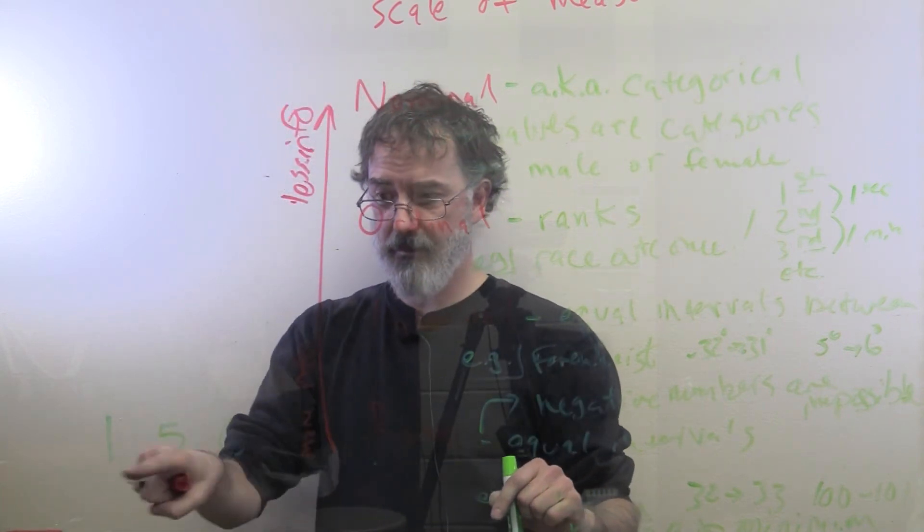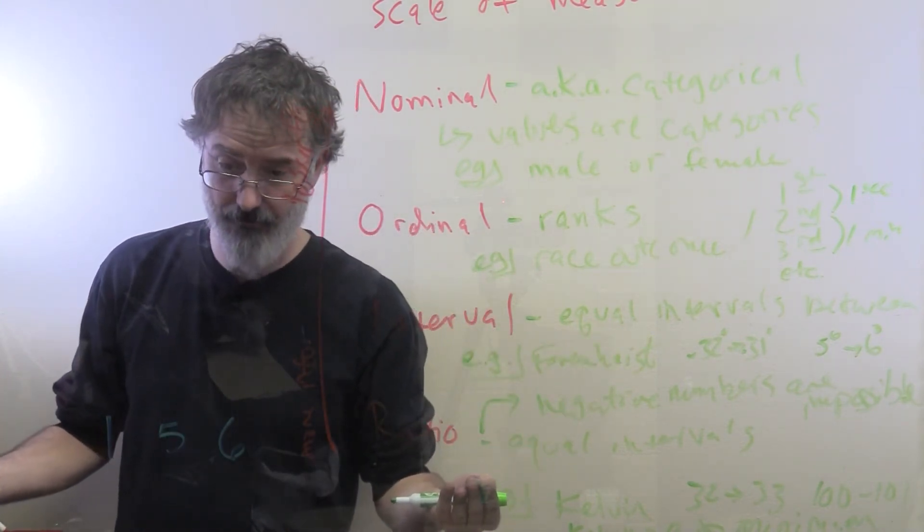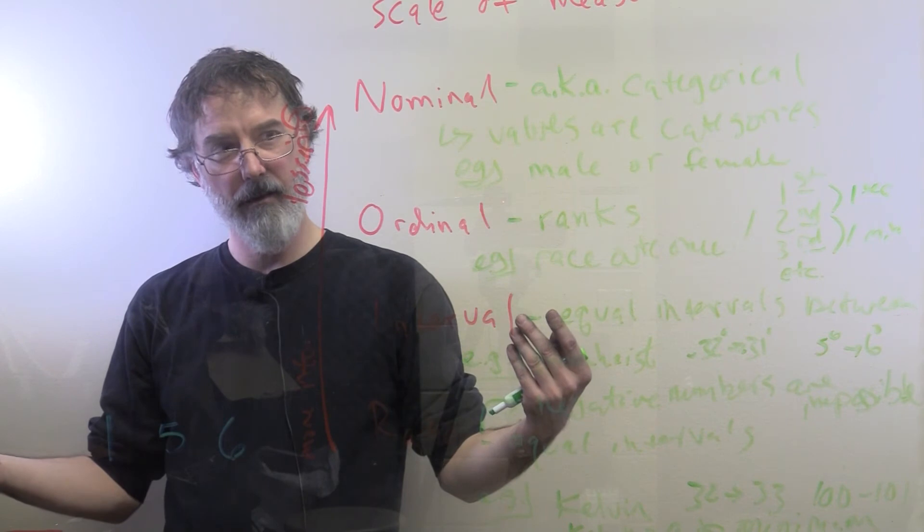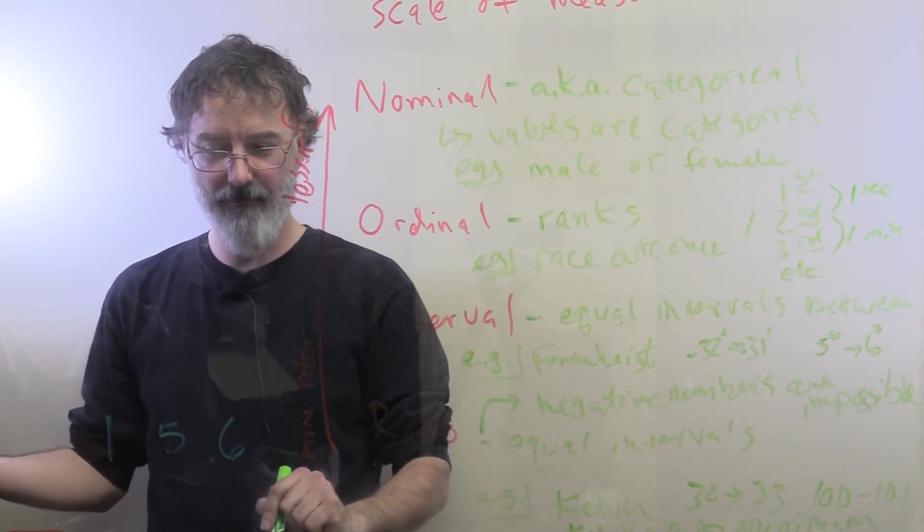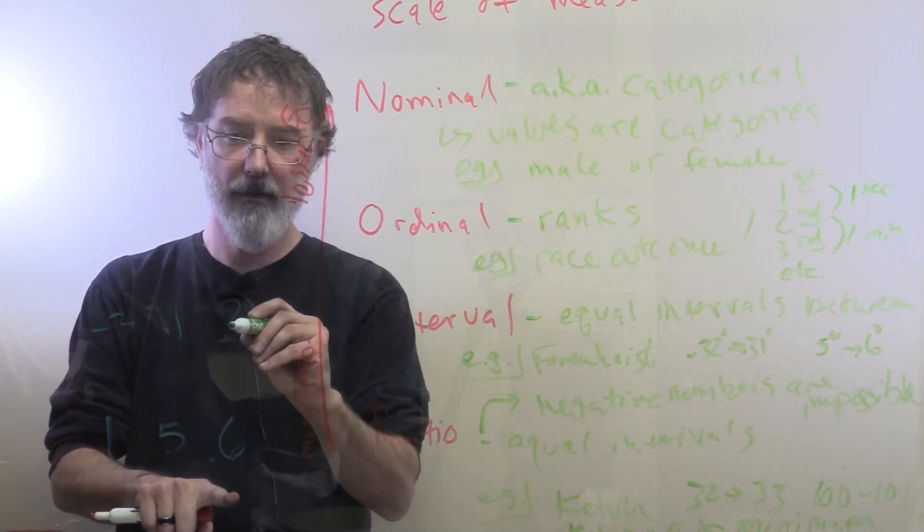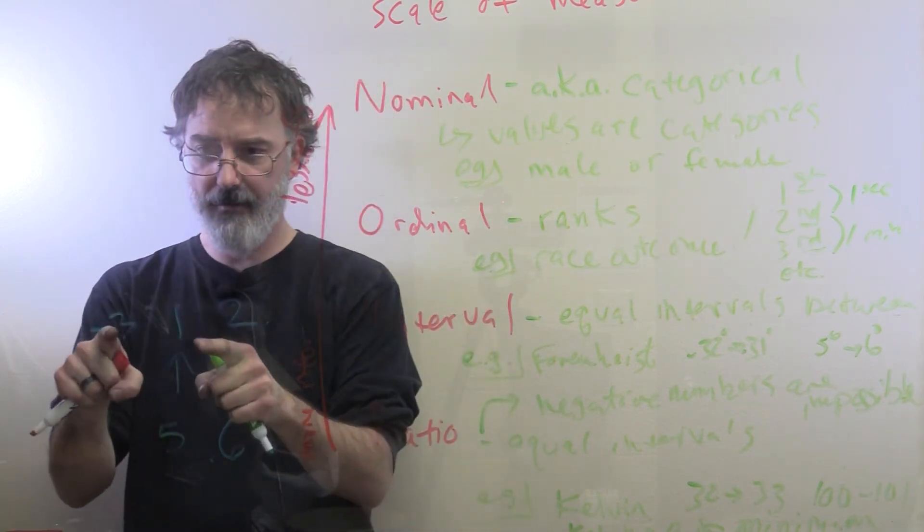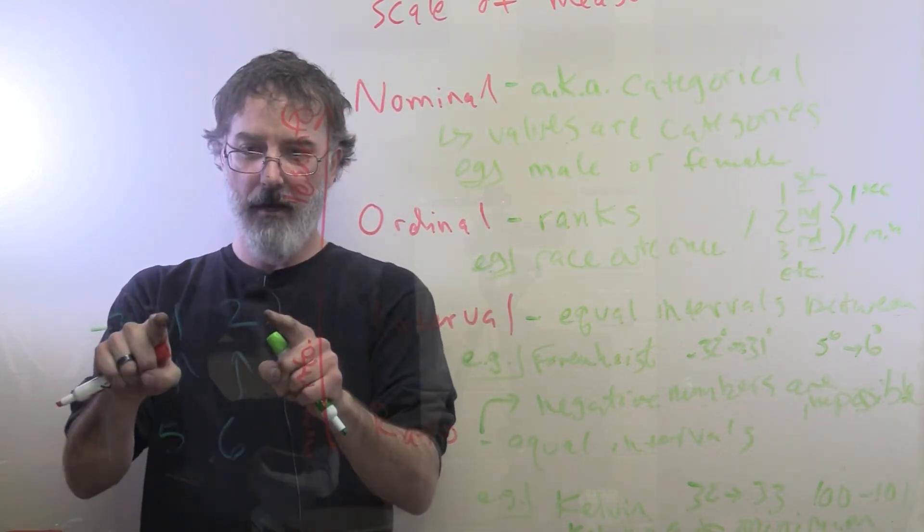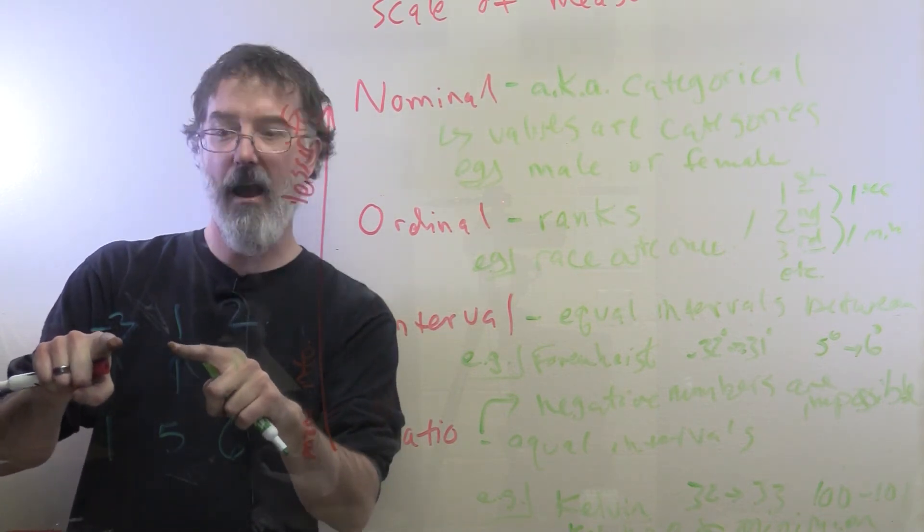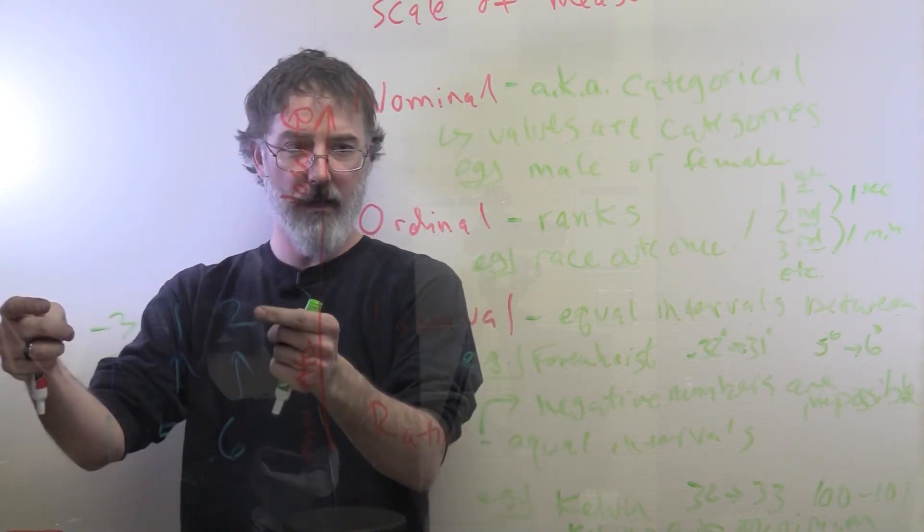You could transform these numbers into an interval scale if you wanted to. One easy way to do it would be just to subtract the mean of these. 1 plus 5 is 6, 6 plus 6 is 12, 12 divided by 3 is 4. If we just subtract 4 from each of these, you get negative 3, 1, and 2. With this new bizarre interval scale of the number of cookies that we have, notice this is still a difference of 4, just like it was before, and this is a difference of 1. So we have held on to our equal interval aspect of it, but no longer is this person five times as many. You cannot take a ratio of negative 3 and 1 and make anything meaningful out of it. So we have gone from ratio data to interval data.